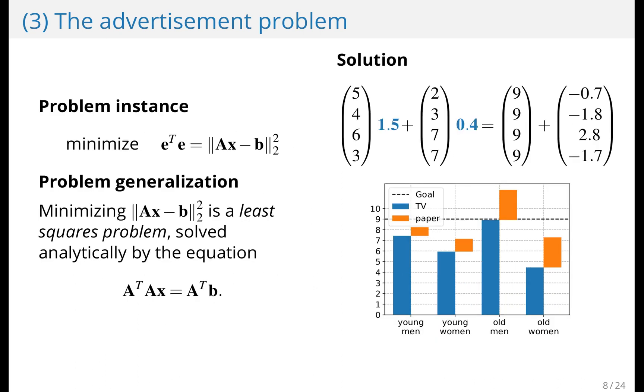And it turns out that this is a least squares problem. And it can be solved efficiently for thousands of variables very easily on a desktop computer. And to your right you see the solution. We reach old men more than we reach young women, but we get pretty close with all four subpopulations.